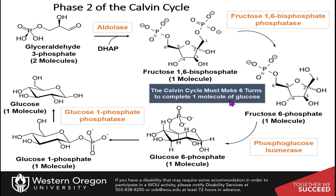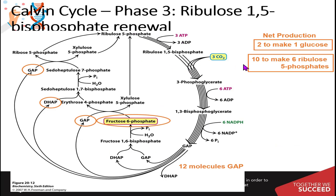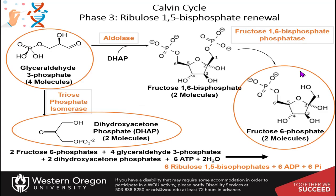The Calvin cycle must make 6 turns to complete 1 molecule of glucose. Phase 3 is the recovery phase of our 6 molecules of ribulose-1,5-bisphosphate. We use 2 molecules of glyceraldehyde-3-phosphate to make 1 glucose, and we have 10 left to make our 6 ribulose-5-phosphates. We'll take a brief look at how this happens — you don't need to memorize this pathway, it's pretty complex and convoluted.